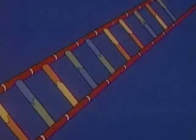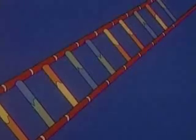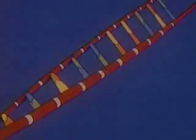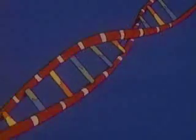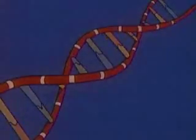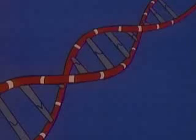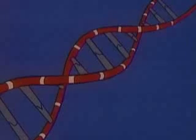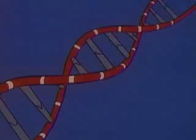In this simplified illustration, a DNA molecule resembles a ladder that becomes twisted. The sides of the ladder are formed of sugar and phosphates which alternate in a regular pattern.